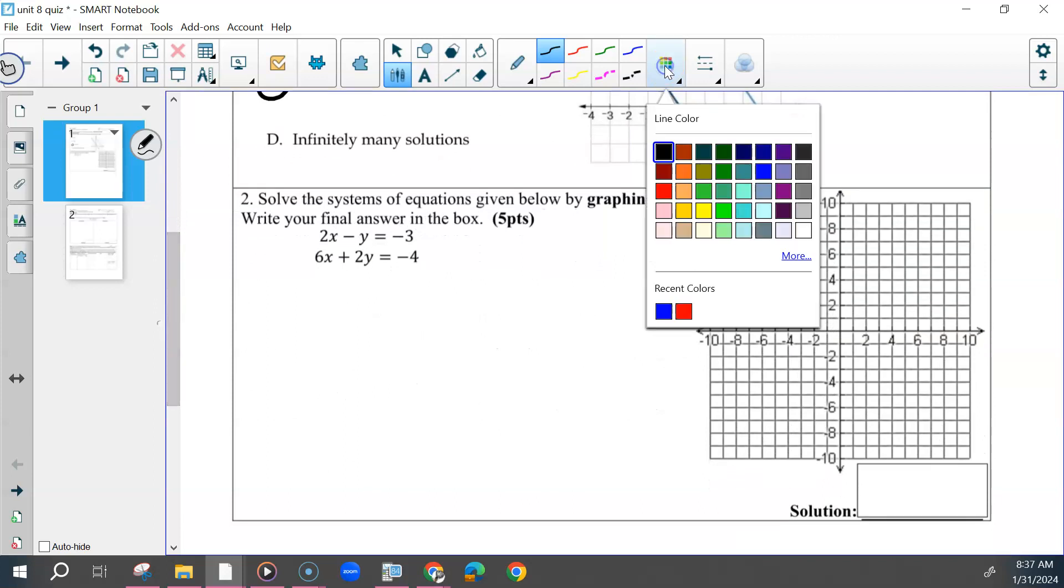For the second one, you needed to solve both pieces of things. If they're both in slope intercept form, subtract 2x for one, subtract 6x for the other. And then divide. This should have been by negative 1, so that y equals 2x plus 3.